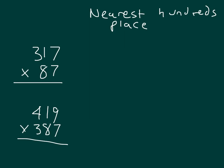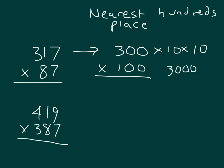We have 317 times 87. 317 is close to 300. 87 is close to 100. And so if we have 300 times 100, we're talking about 300 hundreds, or 300 times 10 times 10. 300 times 10 already is 3,000, and 3,000 times 10 is 30,000. So 300 times 100 is 30,000, which is our estimated product for 317 times 87.